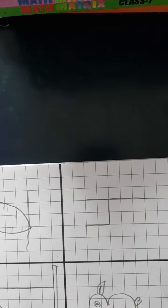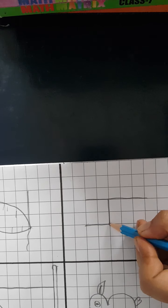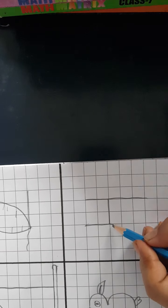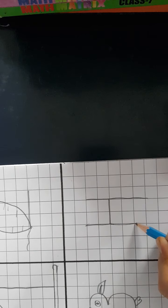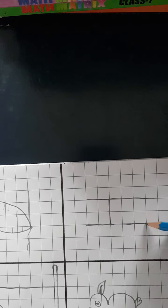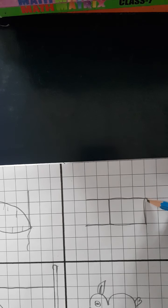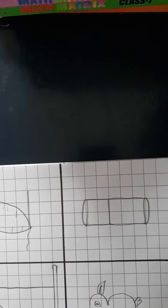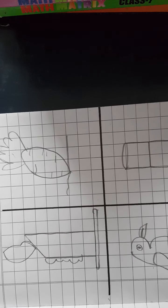Ab next, 4 se hum kya draw kar sakte hain? 4 se hum kaafi saare pictures draw kar sakte hain. But abhi hum bohot simple sa picture draw karenge, jisko hum kehte hain log. Jisko hum niche tak bada denge. Yahan pe hum isi tarike se circle draw kar denge. Yahan pe isi tarike se karenge. Jo lakdi ka log hota hai na, usko kehte hain log. To isi tarike se hum ne ye pictures draw kar liye.